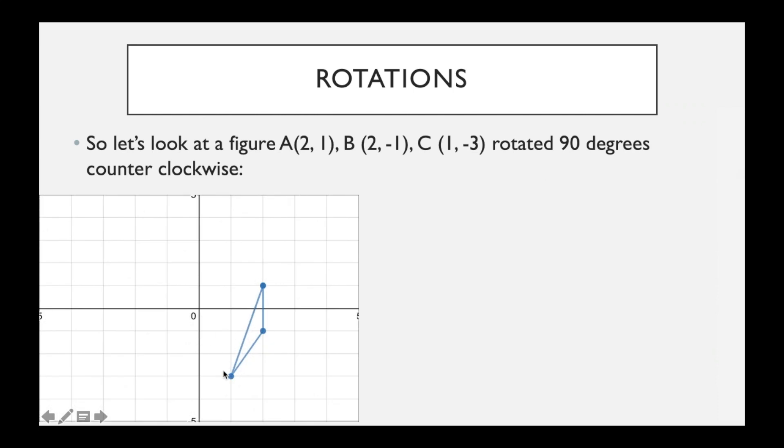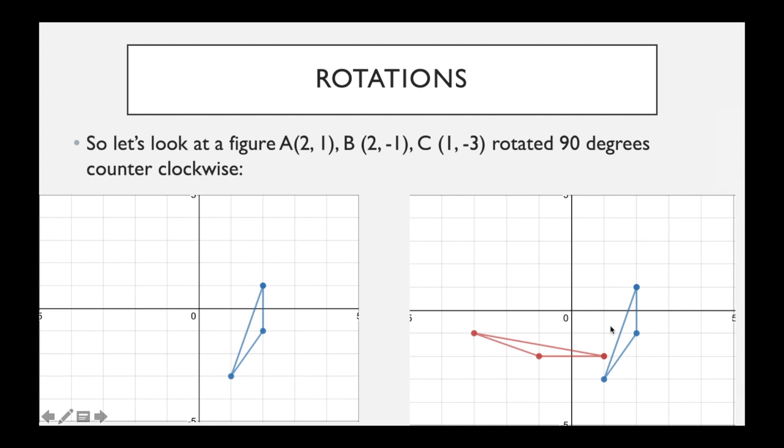So here's our original shape, the pre-image here in blue. And then there's our image after we rotate 90 degrees counterclockwise around the origin. You can see that this side here is going to here. This side here is going here. And then this long one is going there. It is just a 90 degree rotation around the axis.